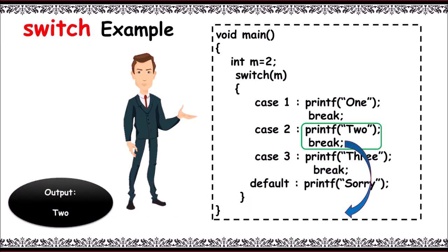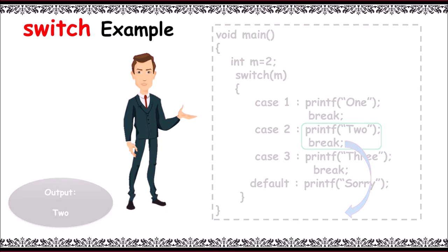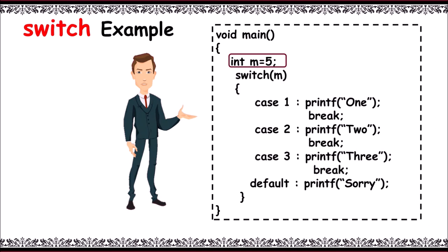Another example: let's take m equals 5. Switch of m returns 5. It is verified with case 1, not matched. Case 2, not matched. Case 3, not matched. Hence, default case gets executed and it prints 'sorry'. The output will be 'sorry'.